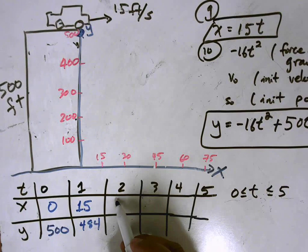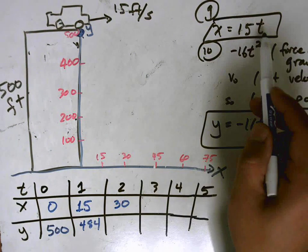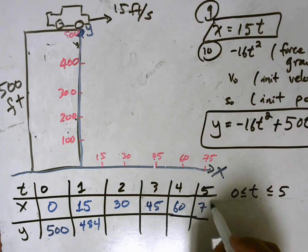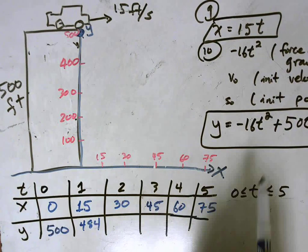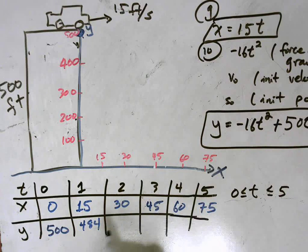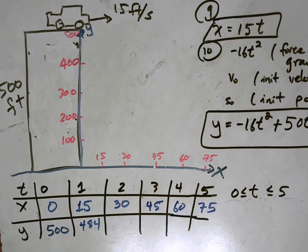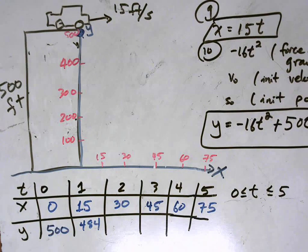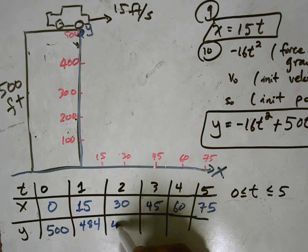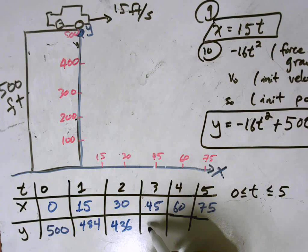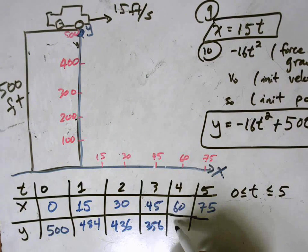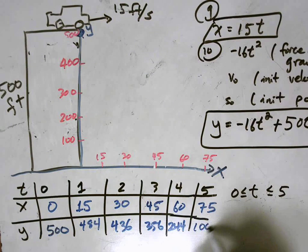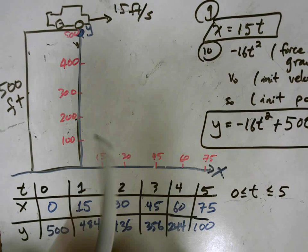So when t is 2, x is going to be 30. When t is 3, x is 45. When t is 4, x is 60. When t is 5, x is 75. And then similarly, I'm going to substitute t in here several times to fill out the rest of this table. So when t is 2, this is going to be 4 times negative 16 plus 500. That's going to be 64. So this gives me 436, 356, 244. And finally, when t is 5, y is going to be 100. And then I'm going to take these points and plot them on the graph.